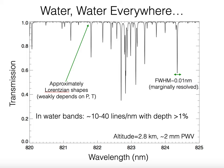This is what a typical absorption spectrum for water at around 822 nanometers looks like at an observatory representative of one in the desert southwest of North America. The lines have widths of about 0.01 nanometer, which means they're nominally resolved by a high-resolution astronomical spectrometer. They have line shapes that are approximately Lorentzian because the water vapor in our atmosphere is constrained to lower levels where the pressure is relatively high.